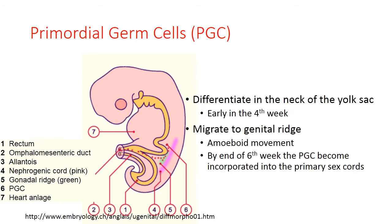On this picture you can distinguish the red cells which migrate from the yolk sac to the genital ridge.